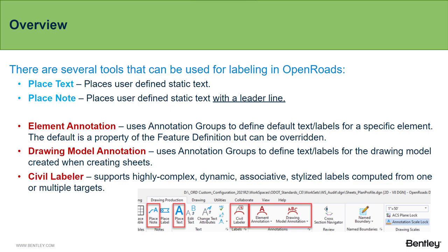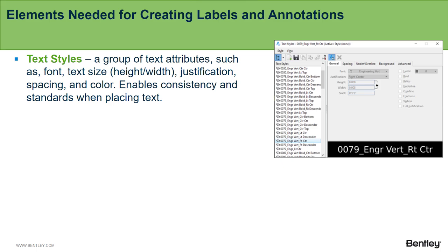In summary, the blue icons are associated with basic MicroStation commands for manual annotation, while the red icons are dedicated to commands that facilitate automated annotation and labeling. Envision your final drawing, which consists of a combination of traditional MicroStation commands and specific commands tailored for civil engineering purposes. The focus should be on element annotation, drawing model annotation, and Civil Labeler. First and foremost, one of the key aspects to consider is the text style — ensuring that the fonts, sizes, and stylization of the text are aligned with your preferences. You can achieve this by utilizing the Text Style Manager, which allows you to define and manage various text styles, including fonts, justification, spacing, color, and other related parameters.